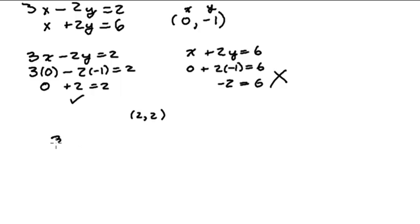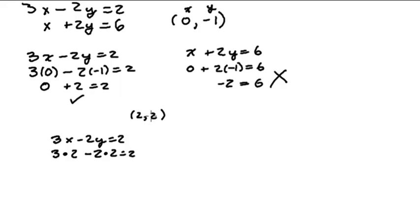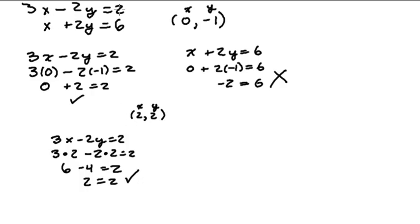Checking the first equation, 3x minus 2y equals 2, I'll put in 2 for x and 2 for y: 3 times 2 minus 2 times 2 equals 2, giving us 6 minus 4 equals 2, or 2 equals 2. That works, so the point (2, 2) satisfies the first equation and is a point on that line.